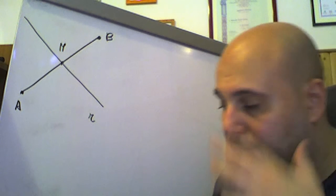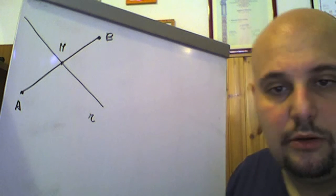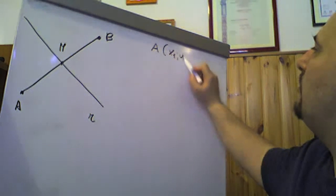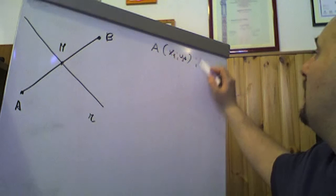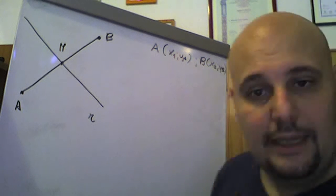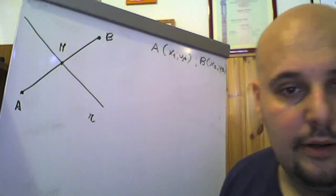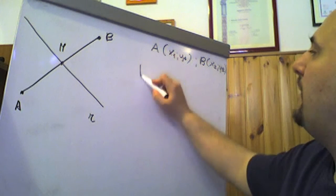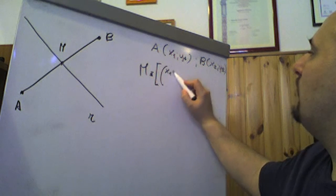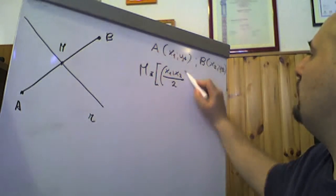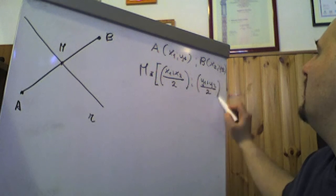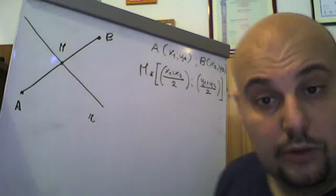Continuiamo questo video parlando del concetto di punto medio. Dati due punti A di coordinate (x₁, y₁) e B di coordinate (x₂, y₂), la formula del punto medio è: M = ((x₁ + x₂)/2, (y₁ + y₂)/2). Così si trova il punto M.